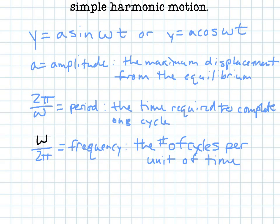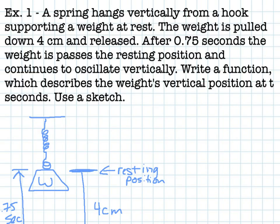Let's go to the first example. For example 1, a spring hangs vertically from a hook, supporting a weight at rest. The weight is pulled down 4 centimeters and released. After 0.75 seconds, the weight passes,